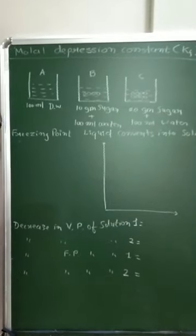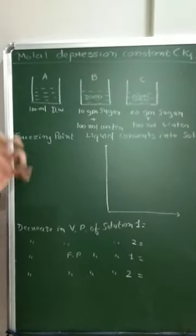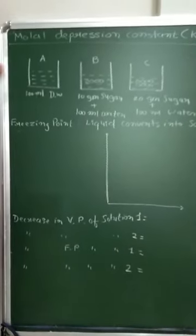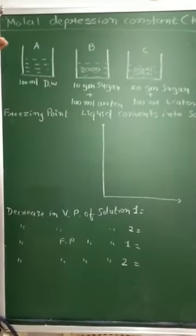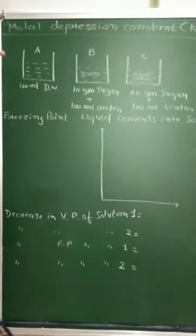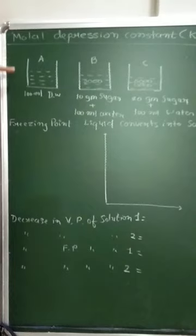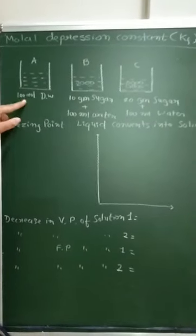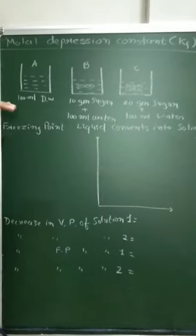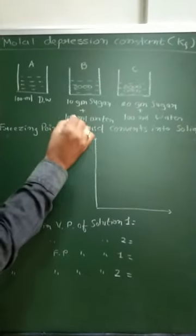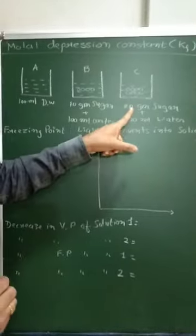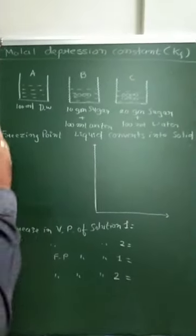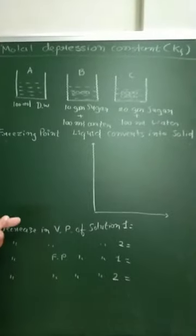We have to freeze these three beakers. Yesterday we explained heating; now we will freeze these three beakers. If we decrease the temperature at a rate down to 0 degrees Celsius: 100 ml of distilled water freezes at 0, 10 grams of sugar plus 100 ml of water freezes at 0, and 20 grams of sugar plus 100 ml of water also freezes at 0.